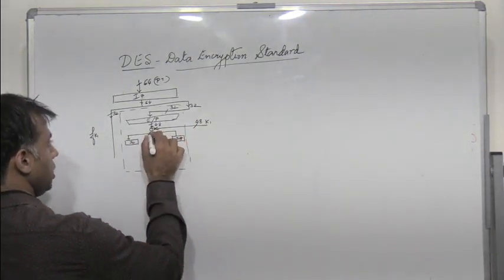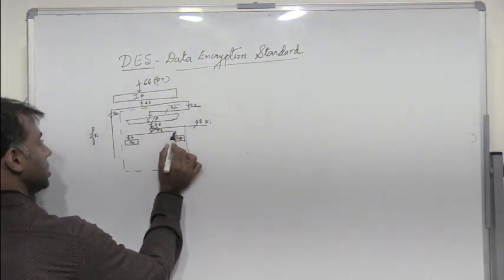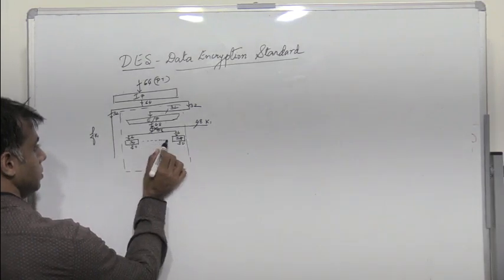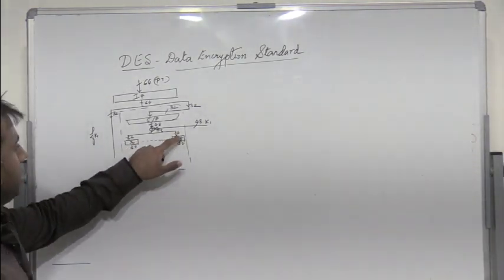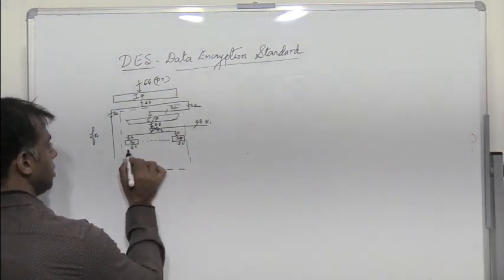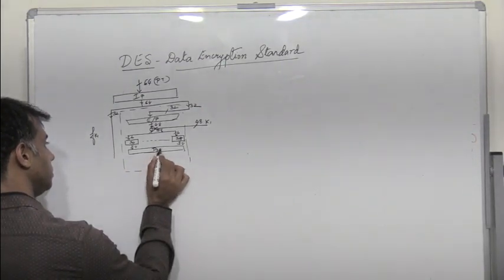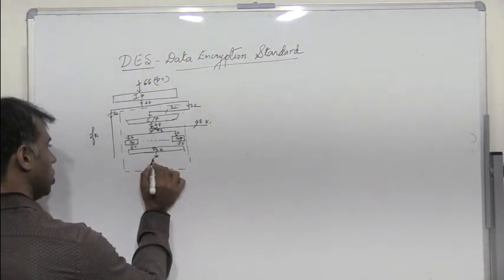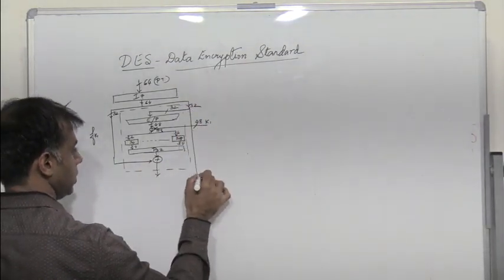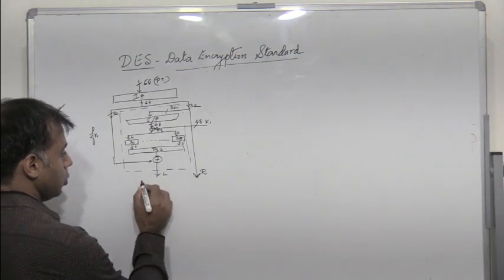Since you have a 48-bit input and there are 8 S-boxes, the input to each S-box is 6 bits and the output is 4. So 6 into 8 is 48, and 4 into 8 is 32. These 32 bits are further permuted and then they are XORed with the left half. You get the left half which gets changed and the right half which goes unchanged. So now this first round is completed.